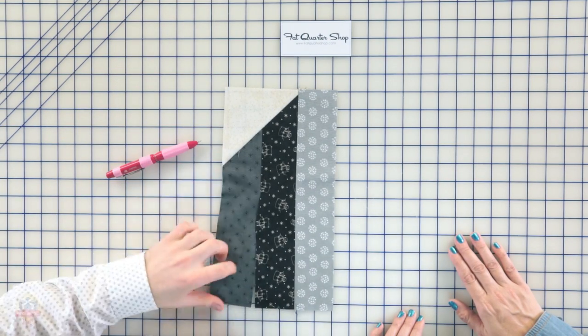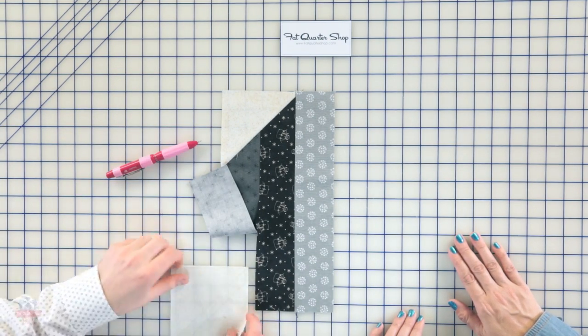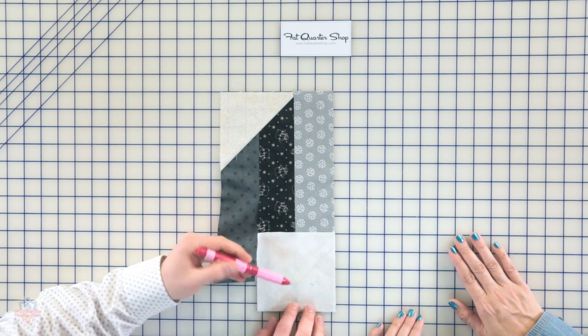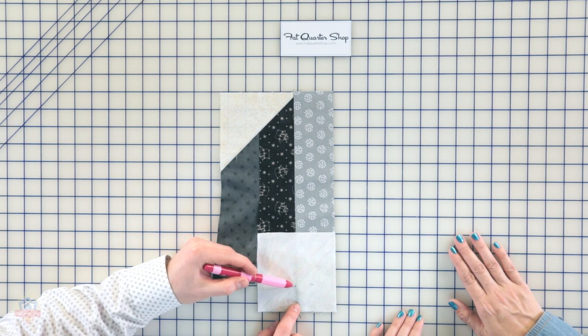After you press to the strip, you're gonna add another square that we drew lines on in the lower right corner this time. Again, you're gonna sew on the lines just on the inside, in fact.